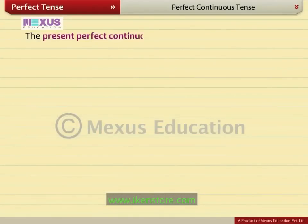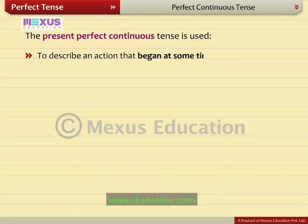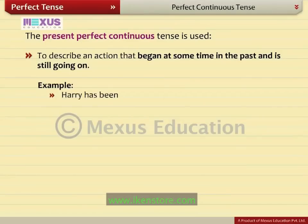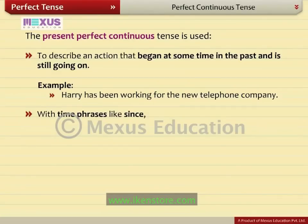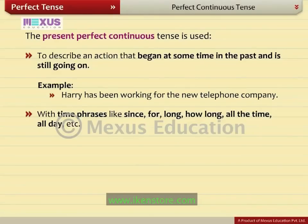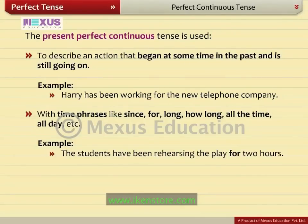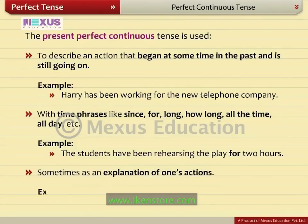The present perfect continuous tense is used to describe an action that began at some point in the past and is still going on. For example, Harry has been working for the new telephone company. It is used with time phrases like since, for, long, how long, all the time, all day, etc. For example, the students have been rehearsing the play for two hours. Sometimes it is used as an explanation of one's actions — for example, I have been reviewing the new building plans.